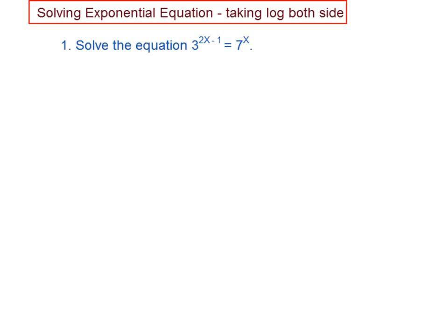Now, we're going to solve the exponential equation by taking log both sides. Let's start with this equation here: 3 power 2x minus 1 equal to 7 power x.